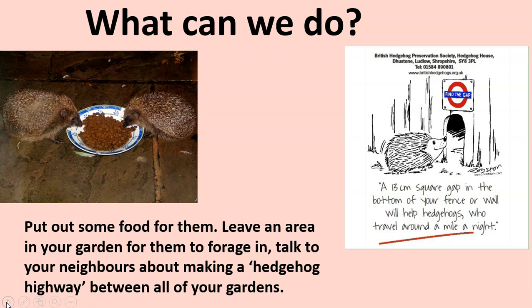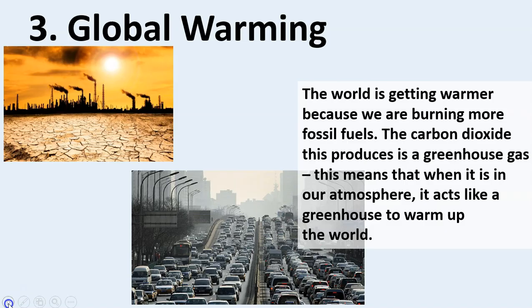Hedgehogs are nocturnal and can travel between one and two miles at night foraging for food. When people put up fences between each garden, we cut off their chance to move around and look for food or find a mate. This is why the numbers of hedgehogs are decreasing. You can put out some food for them, or leave an area in your garden for them to forage in. You could talk to your neighbours about making a hedgehog highway between all of your gardens. If you leave a small gap in your fence, the hedgehogs can go from one garden to another to find food and they're more likely to survive.